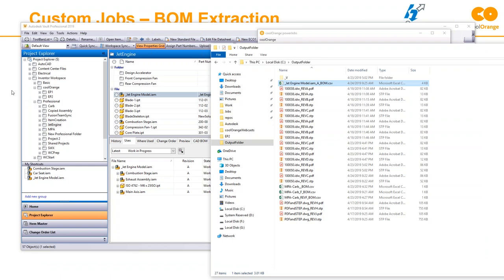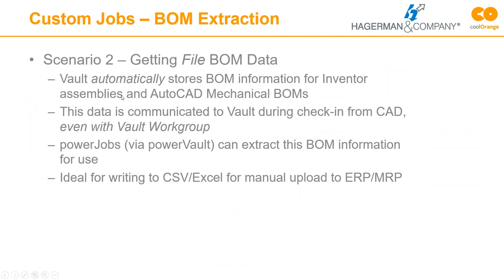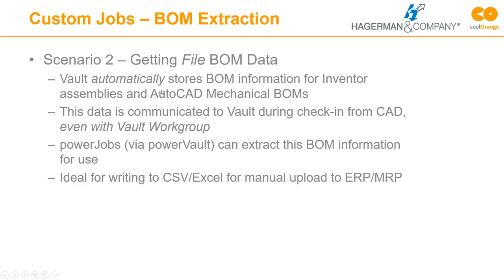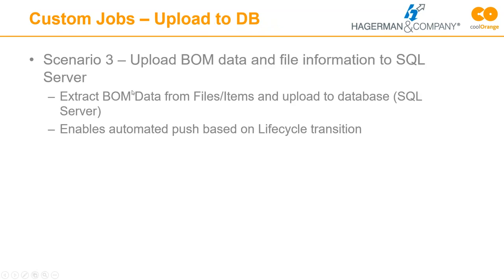When we run that job, it's not getting the CAD files out or querying them at all — it's just getting data out of Vault. And just like that, we have a multi-level bill of materials with parent part number, part number, quantity, and description of everything. That CSV file could then be uploaded to an ERP system, a PLM system, whatever you need.